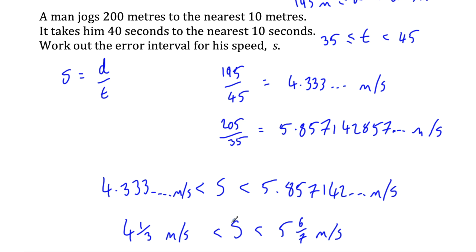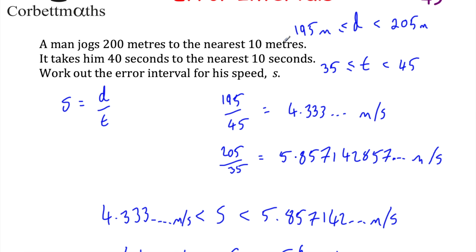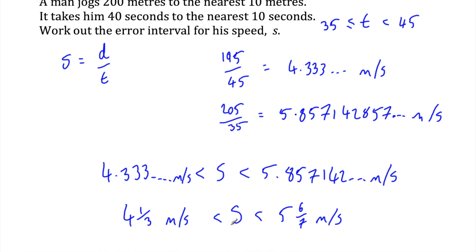The reason we use strict inequalities (greater than, less than) is that the time can't actually be exactly 45 seconds — it's just under. So the speed is anything just slightly above 4.333... m/s. Similarly, the distance can't actually be 205 metres, so the upper bound speed goes up to but doesn't include 5.857... m/s. That's why we use strict inequality symbols for both bounds.